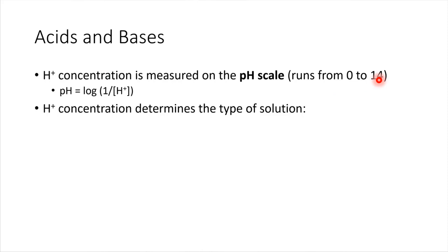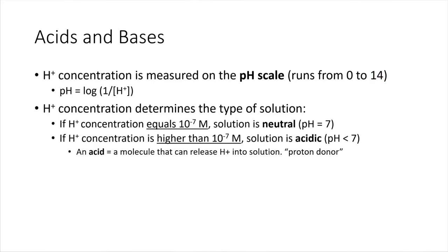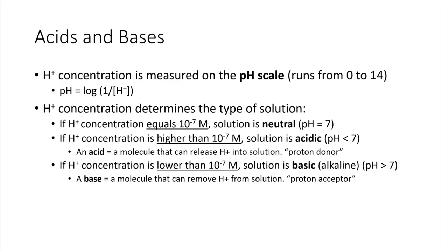So the pH of a solution, or the hydrogen ion concentration of a solution, is what dictates whether we're talking about a neutral solution, an acidic solution, or a basic solution. And just as a reminder, acidic solutions have a pH less than 7. Basic solutions have a pH greater than 7.